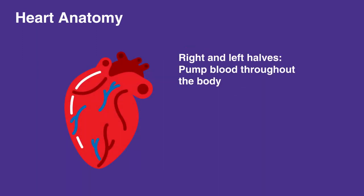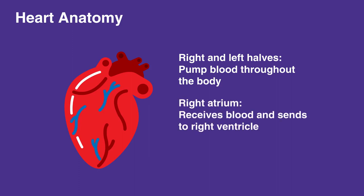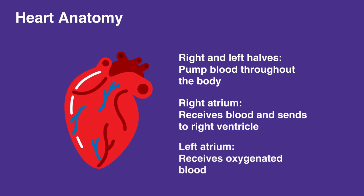The right and the left halves of the heart work together to pump blood throughout the body. The right atrium receives blood from the body and sends it to the right ventricle to be sent to the lungs for oxygenation. The left atrium receives the newly oxygenated blood and sends it to the left ventricle to be sent throughout the rest of the body.